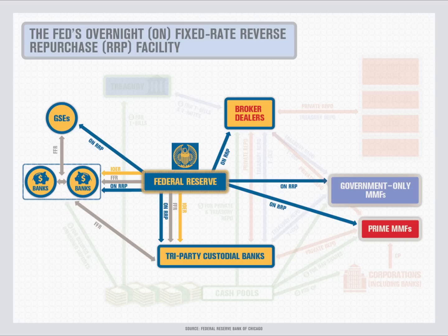To sum up, these new tools should allow the Fed to better control short-term rates in the traditional banking sector by adjusting the interest on excess reserves, and in the shadow banking sector by adjusting the rate on reverse repos. As the FOMC indicated in the April 2015 policy normalization principles and plans, the committee intends to target a 25 basis point range for the federal funds rate. By altering the rates on IOER and overnight reverse repo, the Fed can adjust the upper and lower bounds of the targeted range, guiding overnight money market rates to levels consistent with the Fed's goals of maximum employment and stable prices.